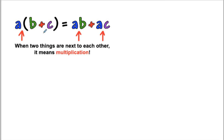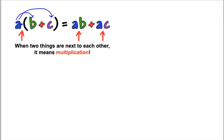Again, let's make sure when two things are right next to each other like this, it means that we have to multiply — so we have to multiply to everything within the parentheses.